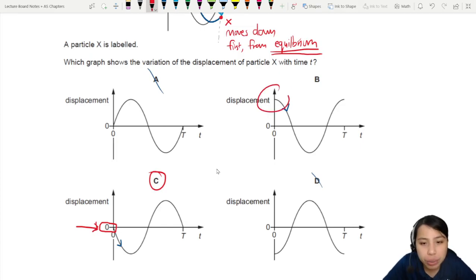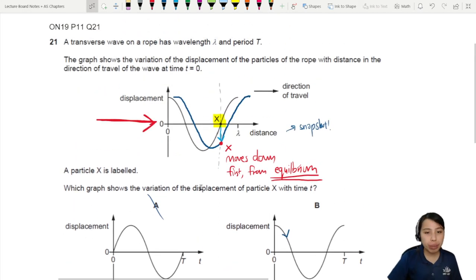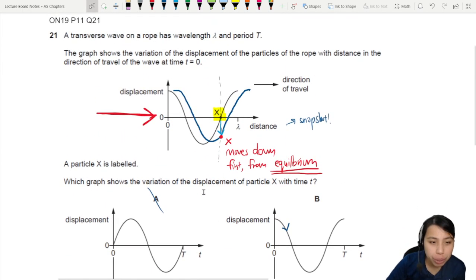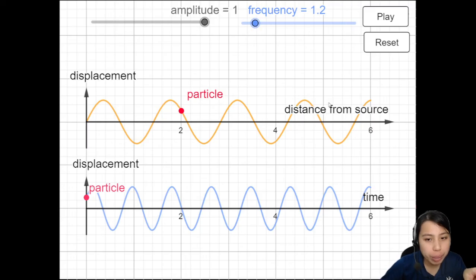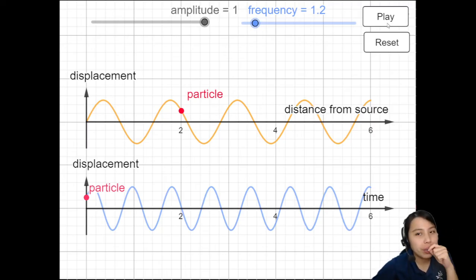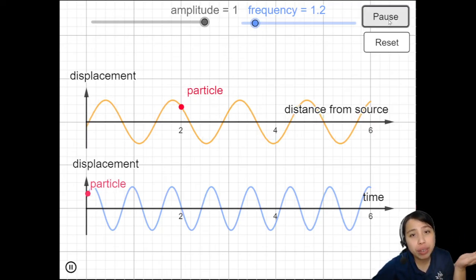B is not correct because you see where we start off, we're at some amplitude maximum displacement there. Remember there are two graphs that you must know in waves. One is in terms of distance, one is in terms of time. Displacement against time. If you put them side by side like this, the one on top is displacement-distance. Down here is displacement-time.